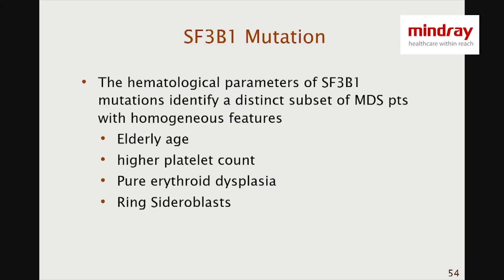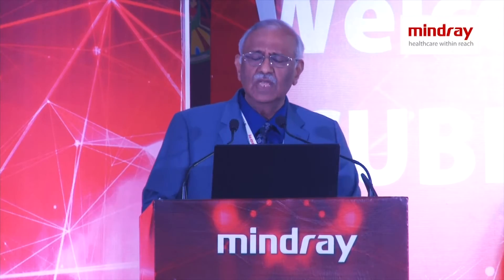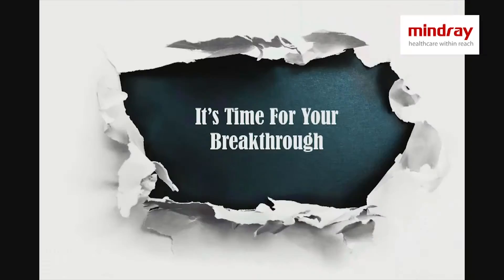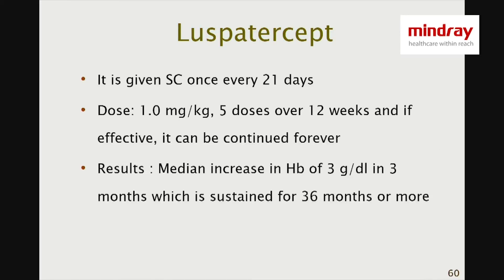SF3B1 mutation identifies a subset of MDS patients who are invariably elderly, have a slightly high platelet count, show a picture like pure red cell aplasia with dysplastic changes and ring sideroblasts, no blast cells, low IPSS risk score, leukemia-free survival, and less impact on overall survival. The treatment till recently was periodic blood transfusions, but now there is a breakthrough — luspatercept, an injection given subcutaneously every 21 days, with which the majority of patients become transfusion-free.